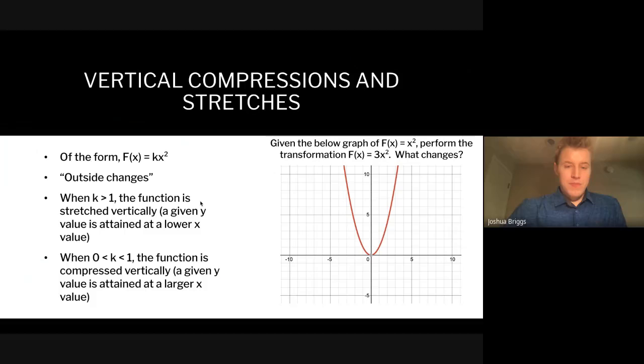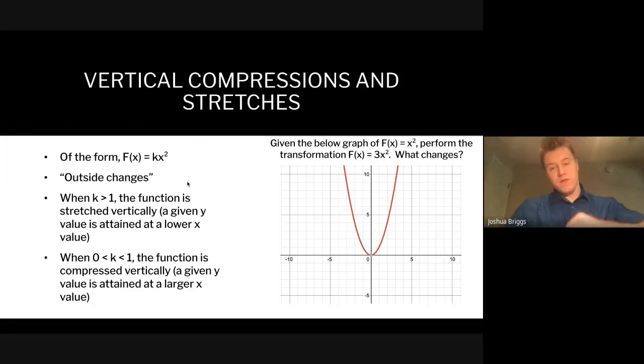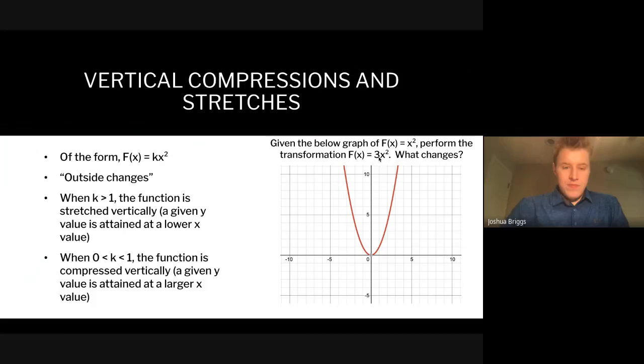Those were all translations, where the function graph stays the same shape. But what if you wanted to change the shape of the function? You can do that with compressions and stretches, which is when you multiply by a constant k. Multiplying on the outside of the operation is called an outside change. When k is greater than one, the function is stretched vertically — think of pulling a rubber band. When k is less than one, it's vertically compressed, getting wider. In this example k equals three, so what would that stretched graph look like?